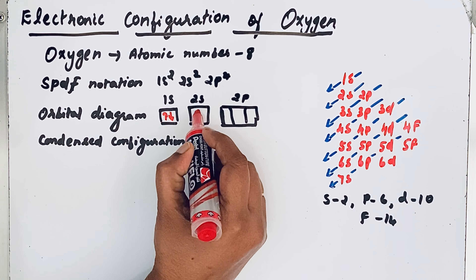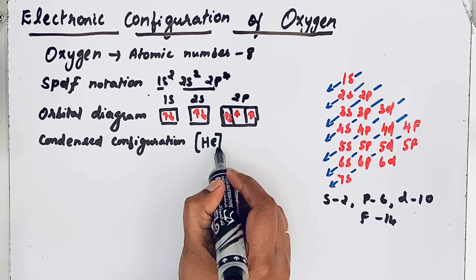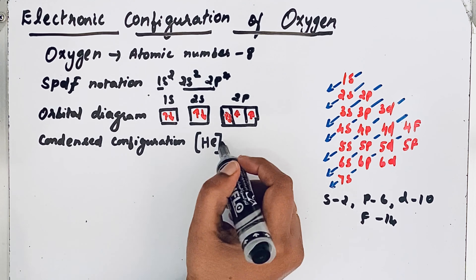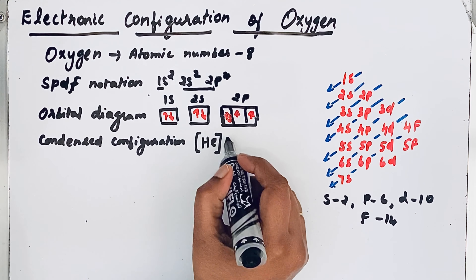Next is condensed configuration, where we reduce the electronic configuration. The electrons in the outer shell are called valence electrons — here that is 2s and 2p. The second shell is the outer shell and the first shell contains the core electrons. We look on the periodic table for the noble gas in the first period, which is helium. We write helium inside brackets to represent the core electrons, which is two electrons. The remaining electrons, 2s² 2p⁴, are written in the usual way. The electrons in the bracket are core electrons and the others are valence electrons. This is the electronic configuration of oxygen.